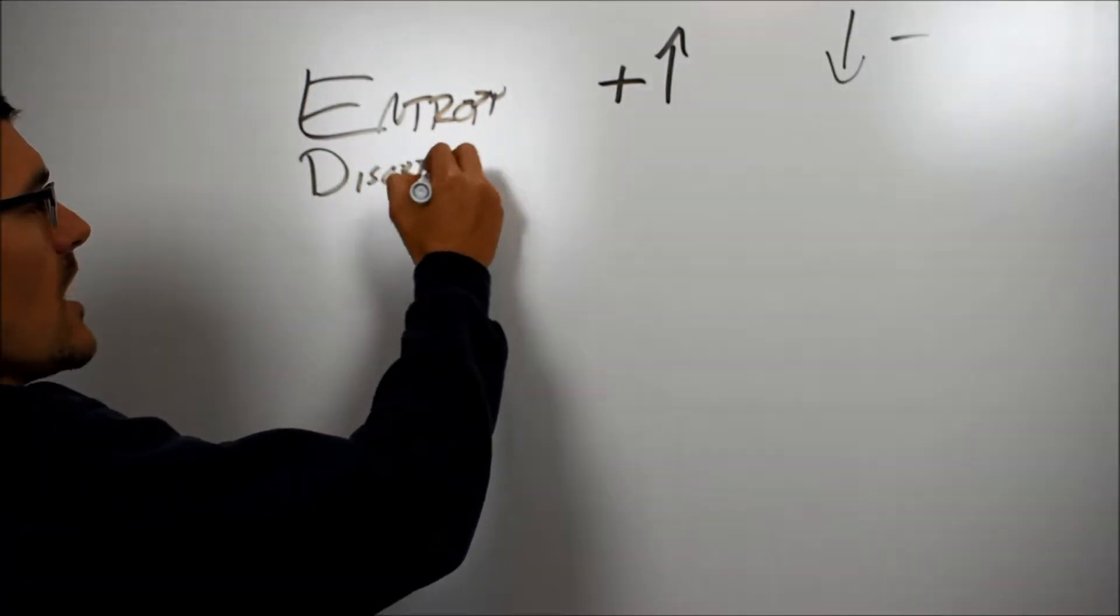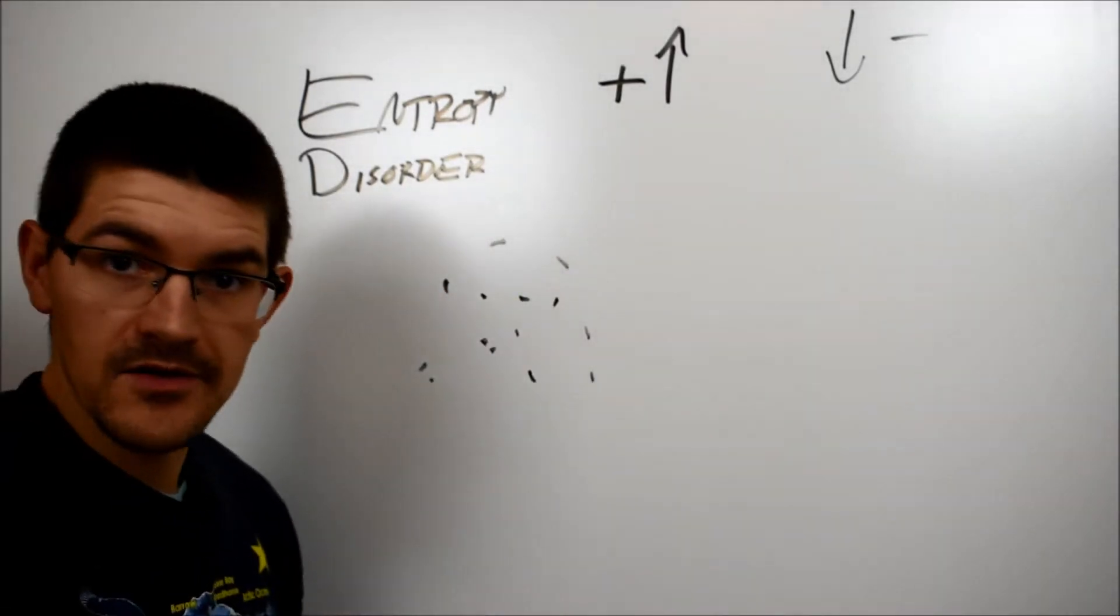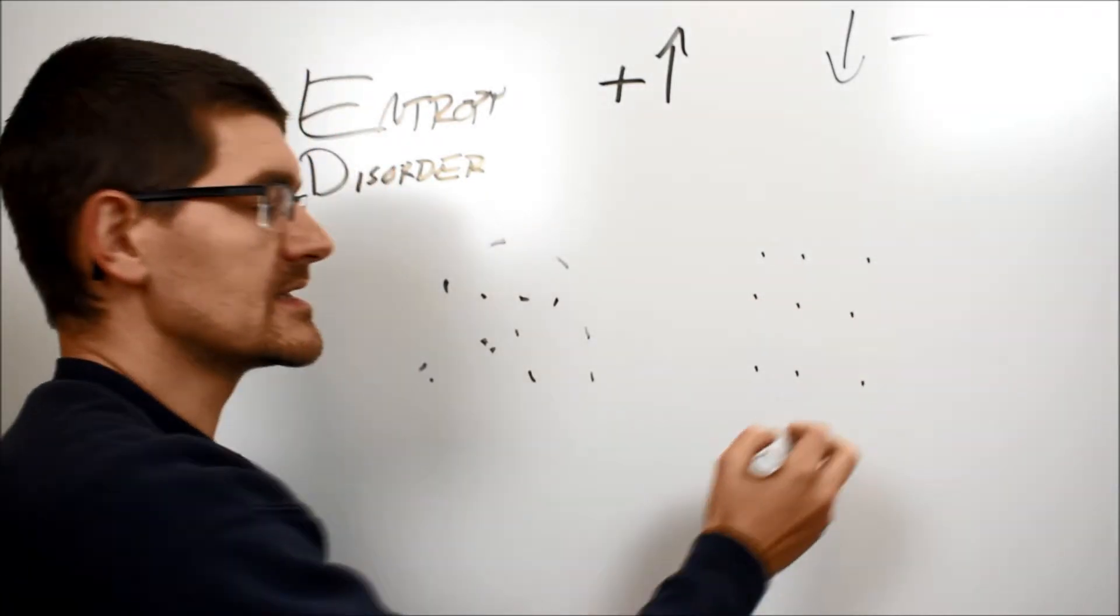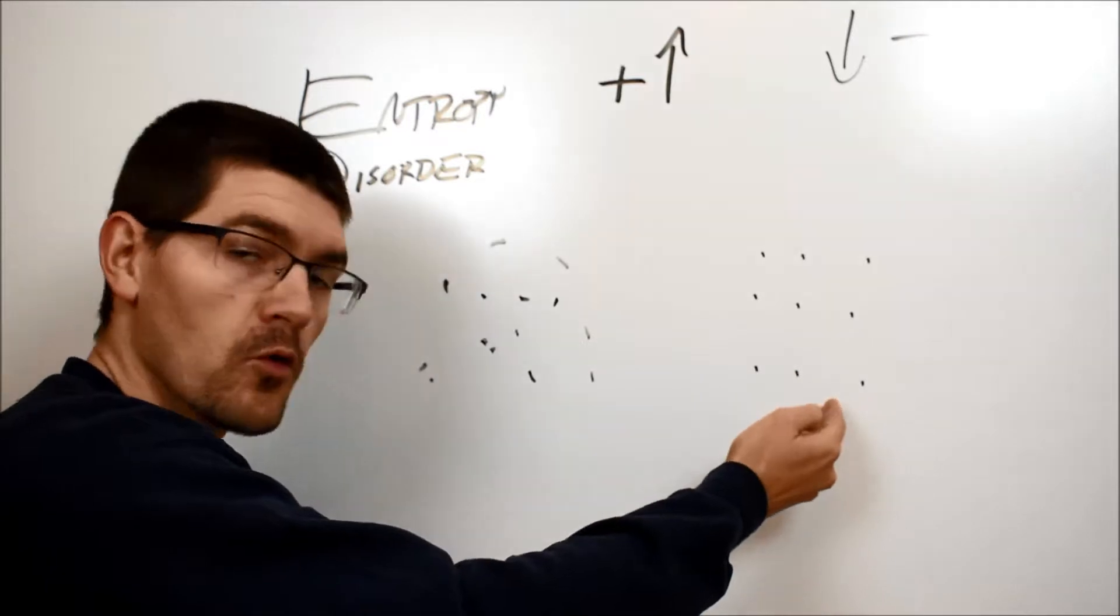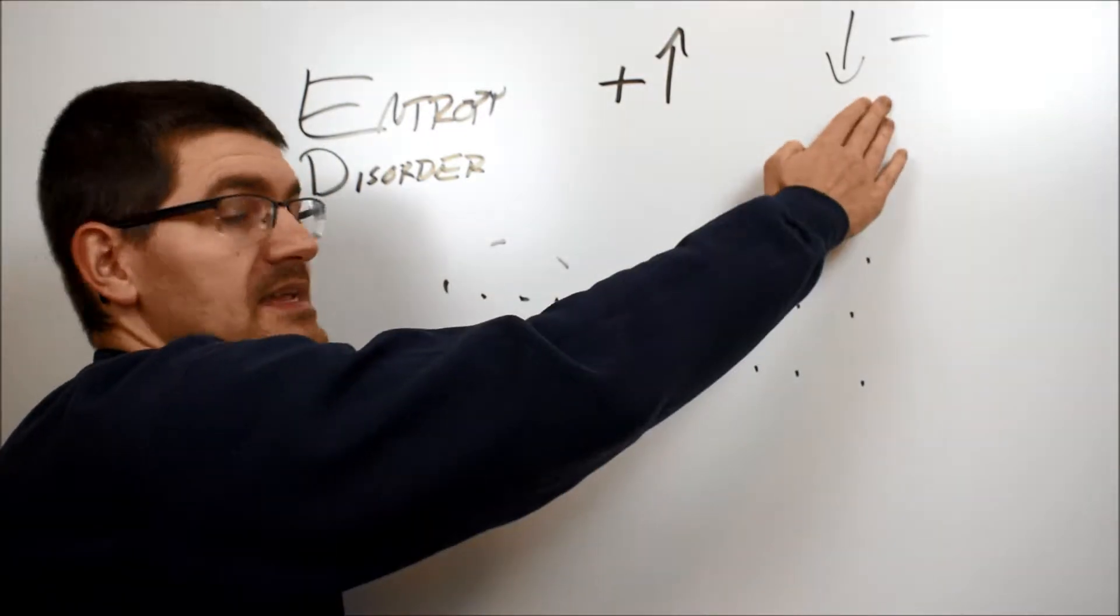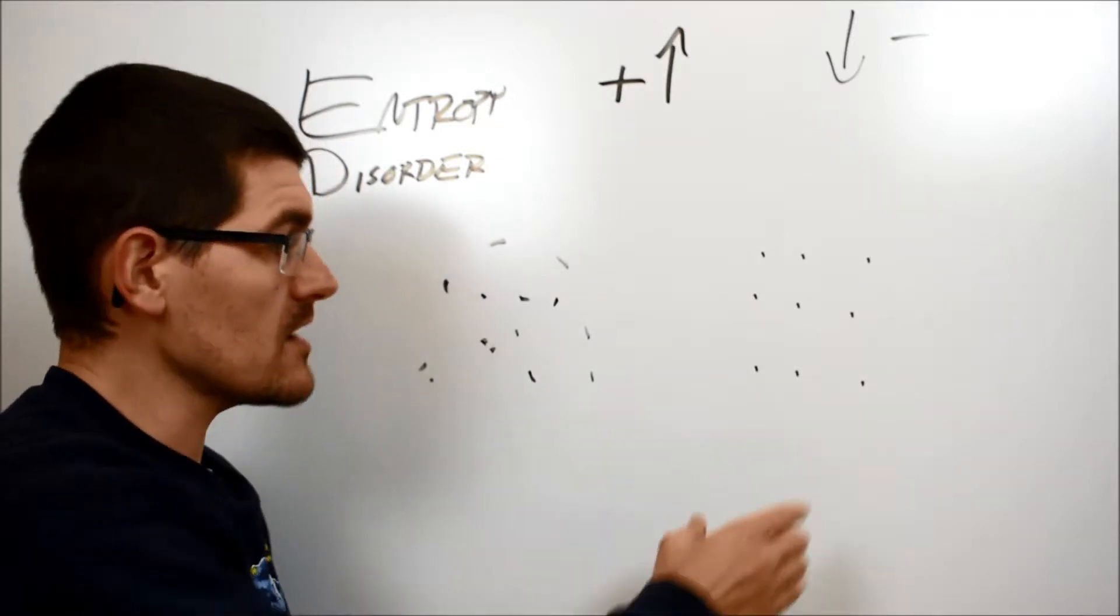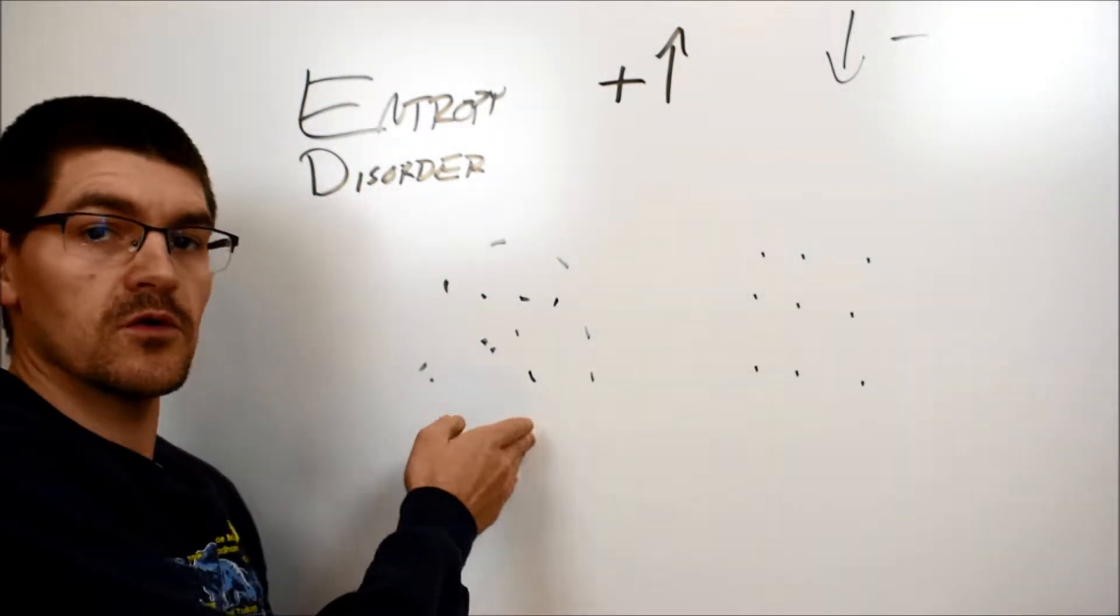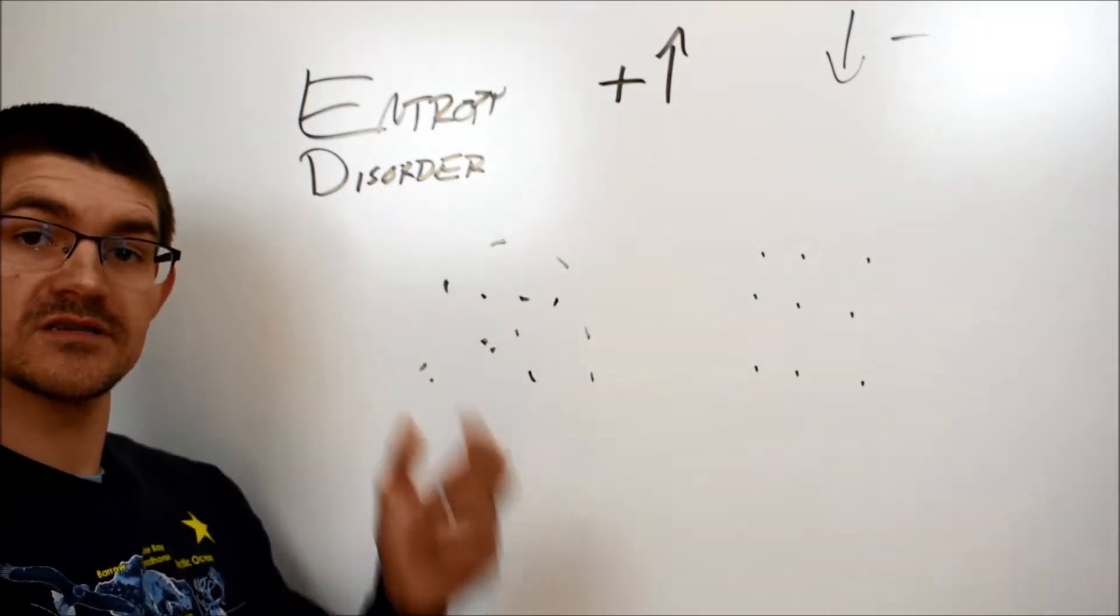In our water example, a whole bunch of disparate water pieces just floating around as a liquid forming into a very organized patterned crystal structure is a decrease in the disorder of a system. We're becoming more ordered and more structured so that's a decrease in entropy, decrease in disorder. Going the other way from solid ice to liquid water we are decreasing the order, increasing the disorder in the system so we have an increase in the entropy.